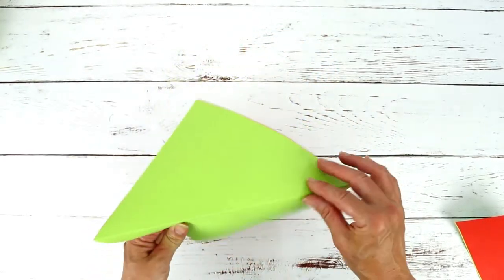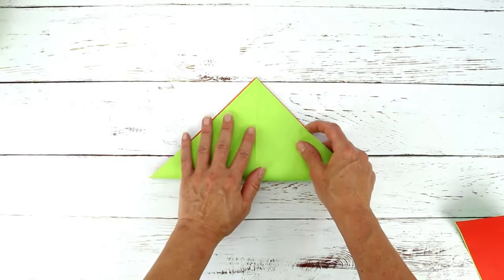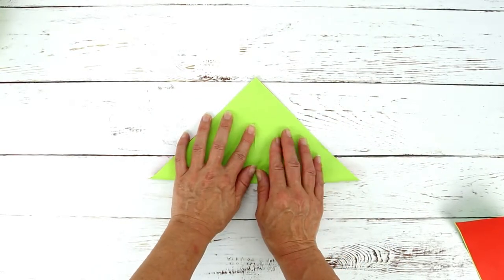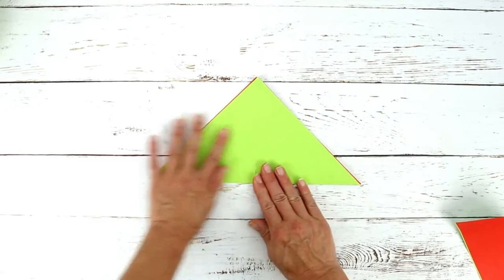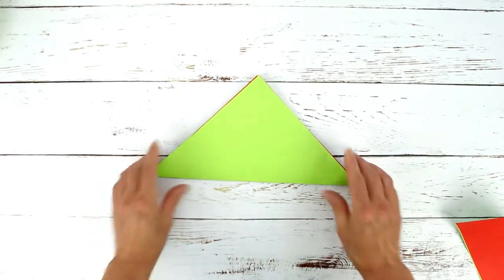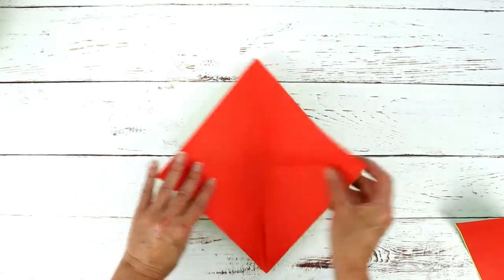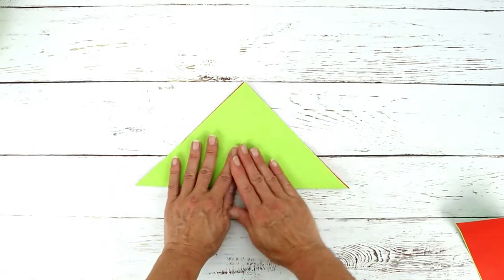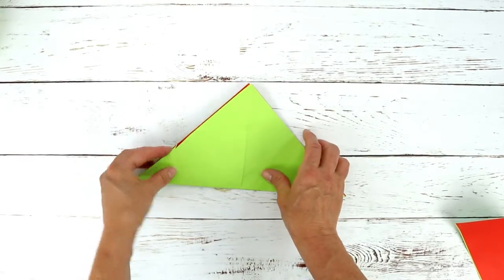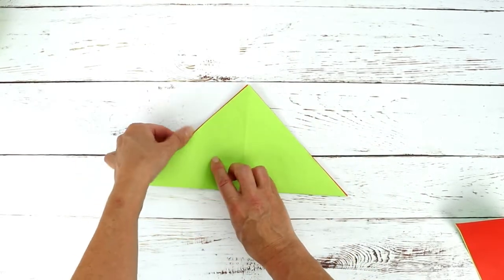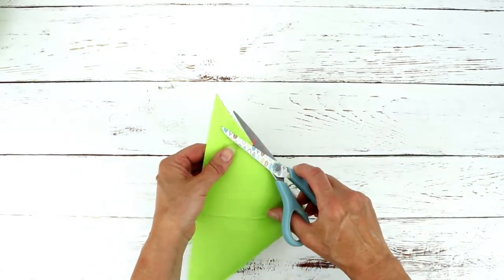We've already got a nice crease down one side and we want to have a crease going the other way diagonally as well. So I'm just going to fold that over and pop that in. So now we've got two creases.